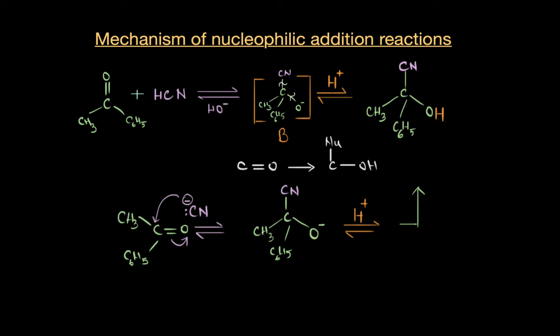So if you work out the mechanism of this reaction it would look something like this. Alright so let me remove this part. The cyanide N attacks the carbonyl compound, gives us a tetrahedral intermediate where the O minus abstracts the H plus ions and gives us the final cyanohydrin compound.